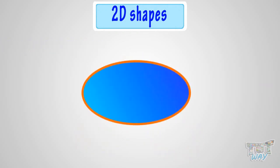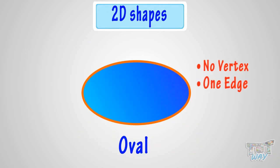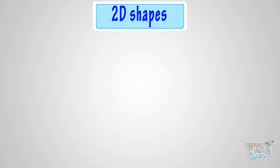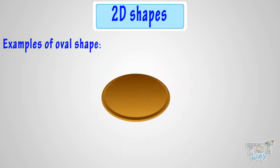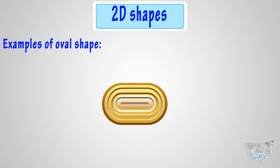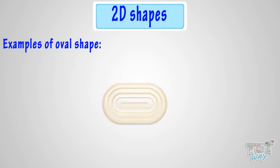This shape is called an oval. It, too, has no vertex. It just has a boundary which is its single edge. Think of things that are oval in shape — these are various things that are oval in shape.